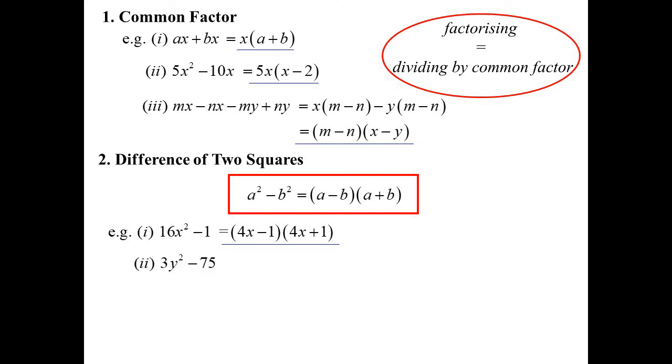So, 3y squared minus 75. Hang on. How do I factorize this? 3 is not something squared. 75 is not something squared. Take out the 3. Take out the 3. The common factor. Always look for the common factor first. Now we've got the difference of two squares. Always look for the common factor first.